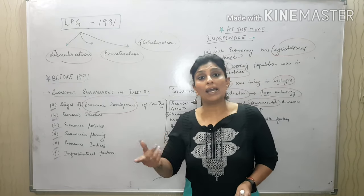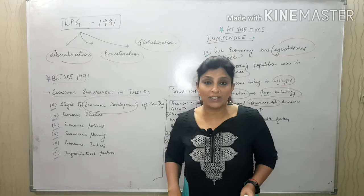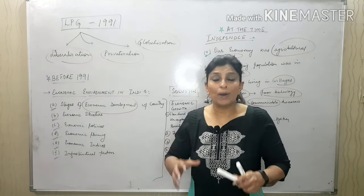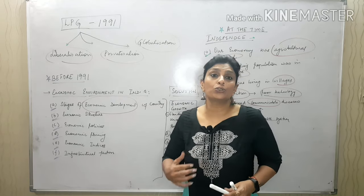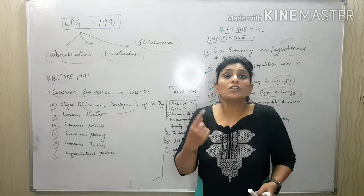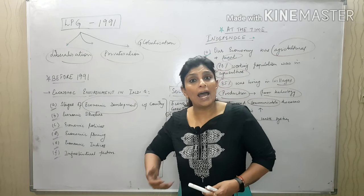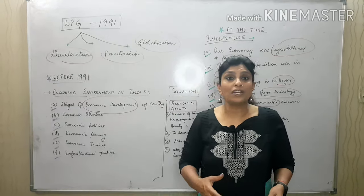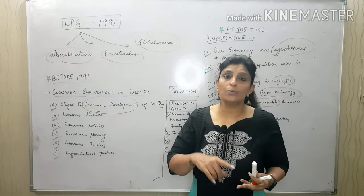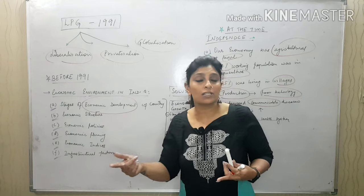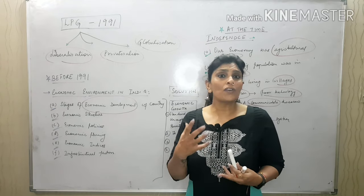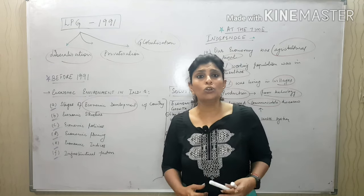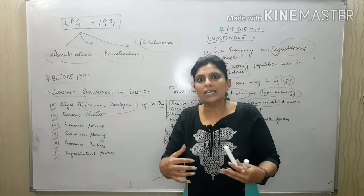Economic policies initiated by the government at that time — committees were set up, many plans were made, but the results were not as good as expected. Five-year economic planning was not working out as intended. In terms of economic indices like GDP, per capita income, and net disposable income, there was dissatisfaction because the contribution to national income could not be seen, and in totality, economic growth was not visible.